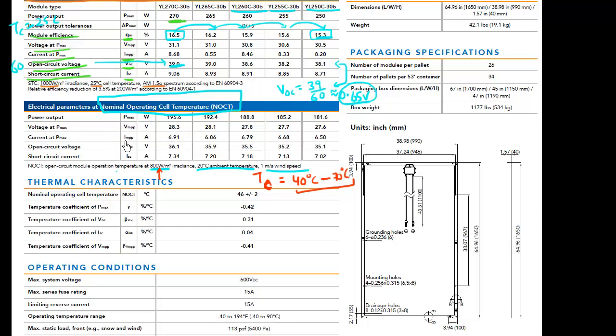So again, at some of these nominal operating test conditions, they specify some of these metrics for these conditions as well. And then another important metric to note is specified in this table over here. Where it gives the temperature coefficient of my power, the temperature coefficient of my voltage, the temperature coefficient of my current. So I notice that as I increase my temperature, my VOC decreases as I increase my temperature, because my VOC has a negative coefficient of the temperature.